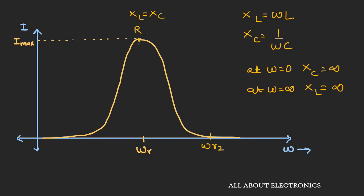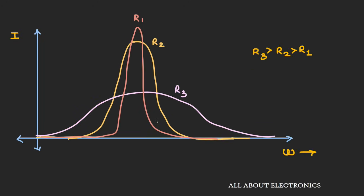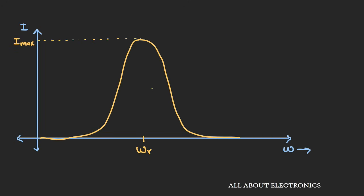For good selectivity, the resonant curve should be as narrow as possible so that you will not find any interference from another circuit. To achieve this, the value of resistance in the circuit should be as low as possible. As you can see, we have three different resonant curves for different values of resistor. As the value of resistance increases, the curve gets wider and wider, and as the value of resistance decreases, the curve gets narrower. So for good selectivity, the resistance should be as low as possible. Also at lower resistance, the peak current we get is also maximum. To define this sharpness of the curve or selectivity of the circuit, two parameters are widely used: quality factor and bandwidth.